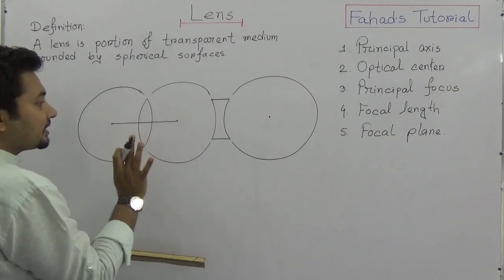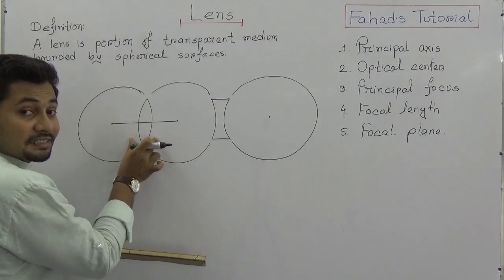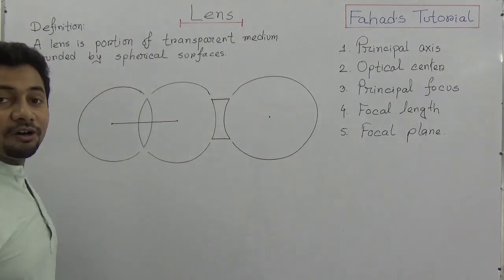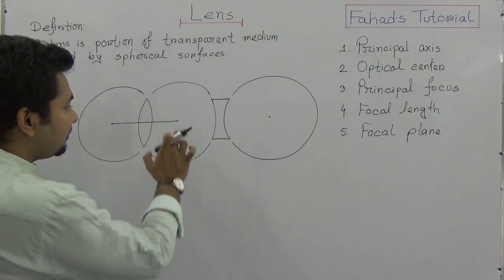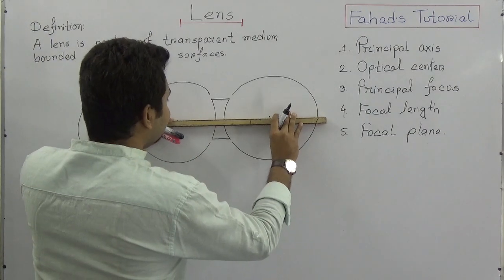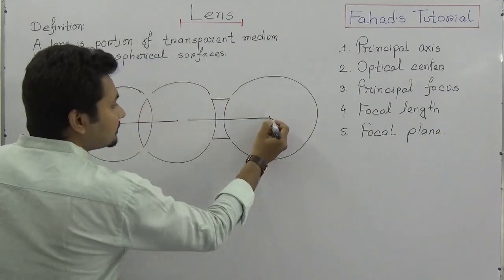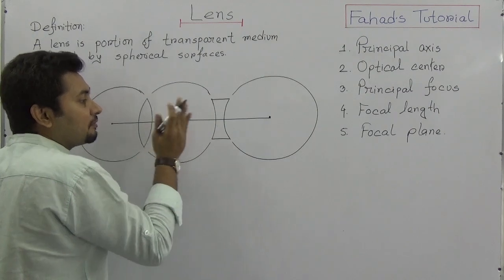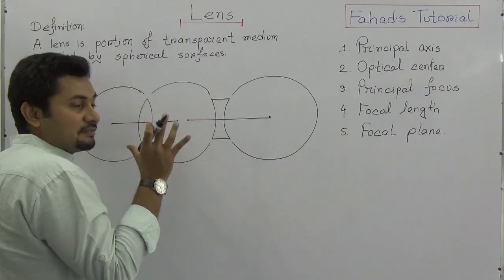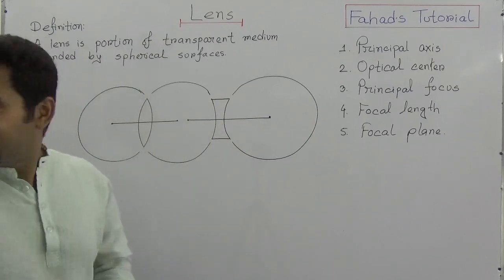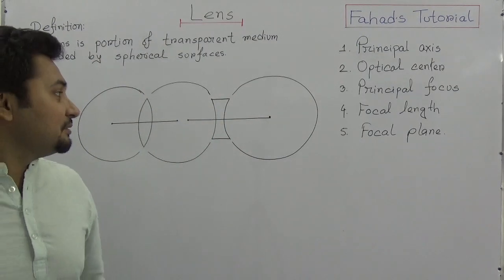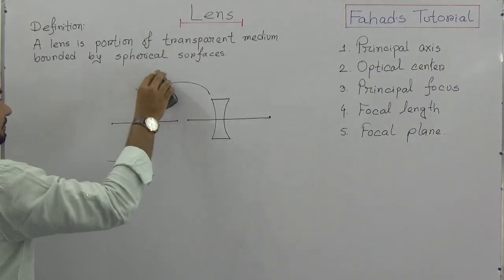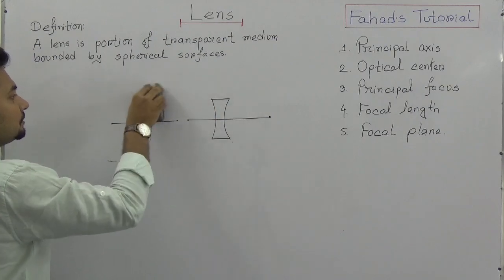This lens is a biconvex lens and this lens is a biconcave lens. If I draw a line — this is the biconvex lens. If I draw the other parts, it will be a concave lens. So we get two types of lens: convex and concave.